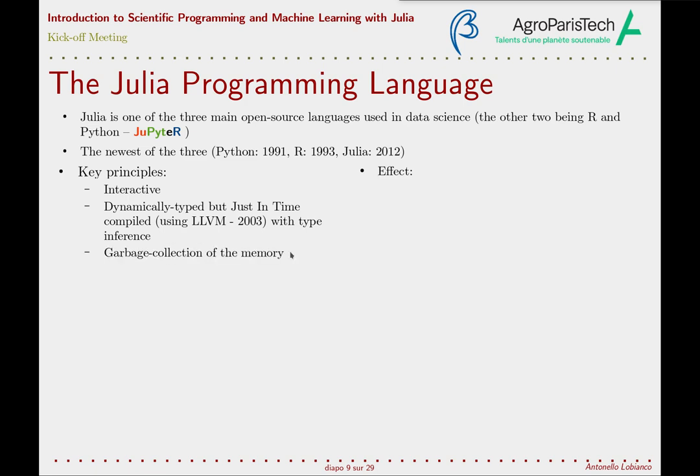Going a bit more technical: Julia has a garbage collector to manage memory. You don't need to worry about freeing memory after allocation or risk running out of memory — this is done automatically. When objects are no longer accessible, they are destroyed. To be fair, this is something all high-level languages have, and also some compiled languages, but it's nice that you don't need to manage memory manually as you do in C or Fortran.